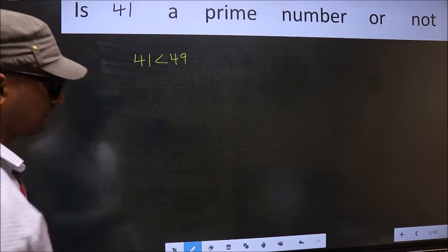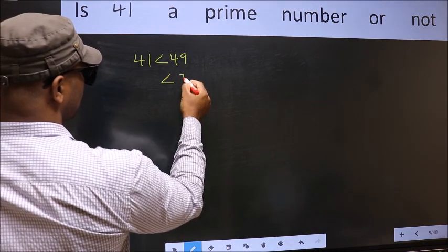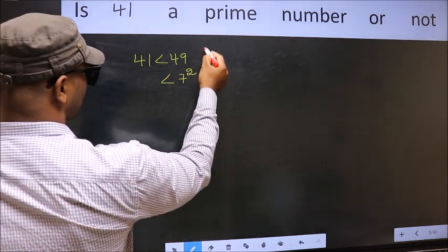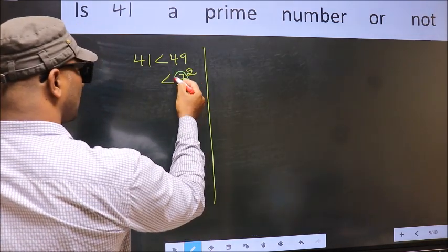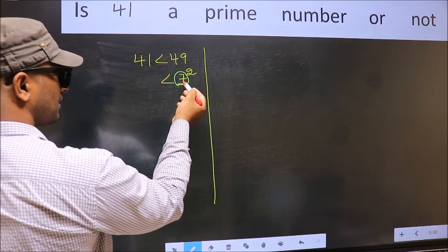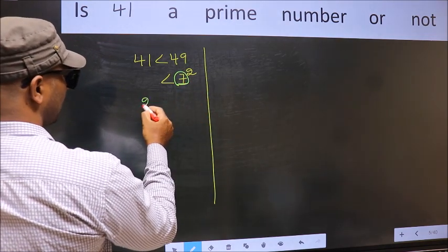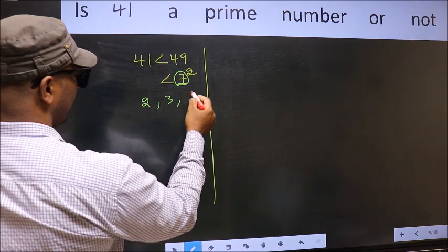Next, 49 is nothing but 7 square. Now, you write all the prime numbers less than this number 7. They are 2, 3, and 5.